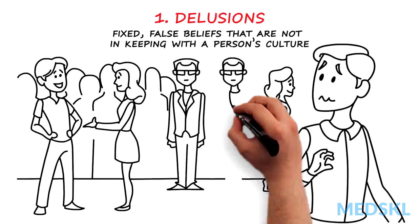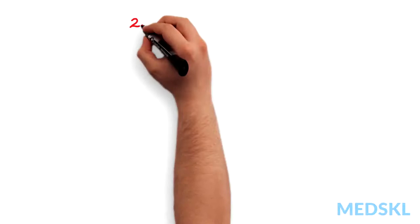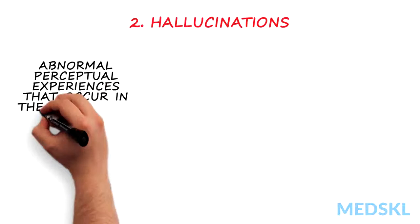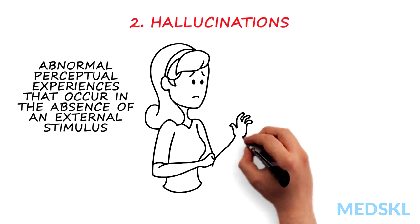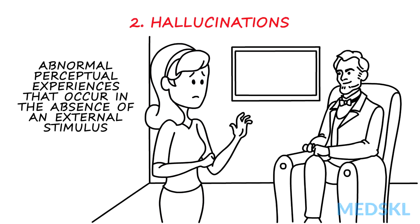2. Hallucinations. Hallucinations are abnormal perceptual experiences that occur in the absence of an external stimulus. They can occur in any of the five senses, and so may be auditory, visual, olfactory, gustatory, or tactile.